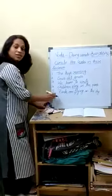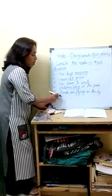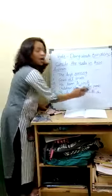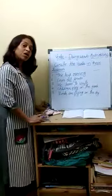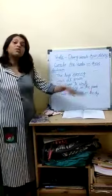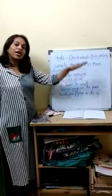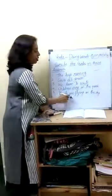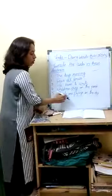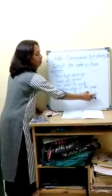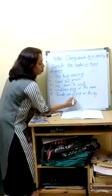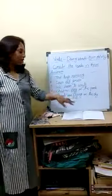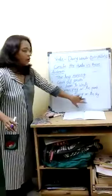Last sentence: Birds are flying in the sky — what are the birds doing? Birds are flying in the sky. So what is the verb here? 'Flying' is the verb.